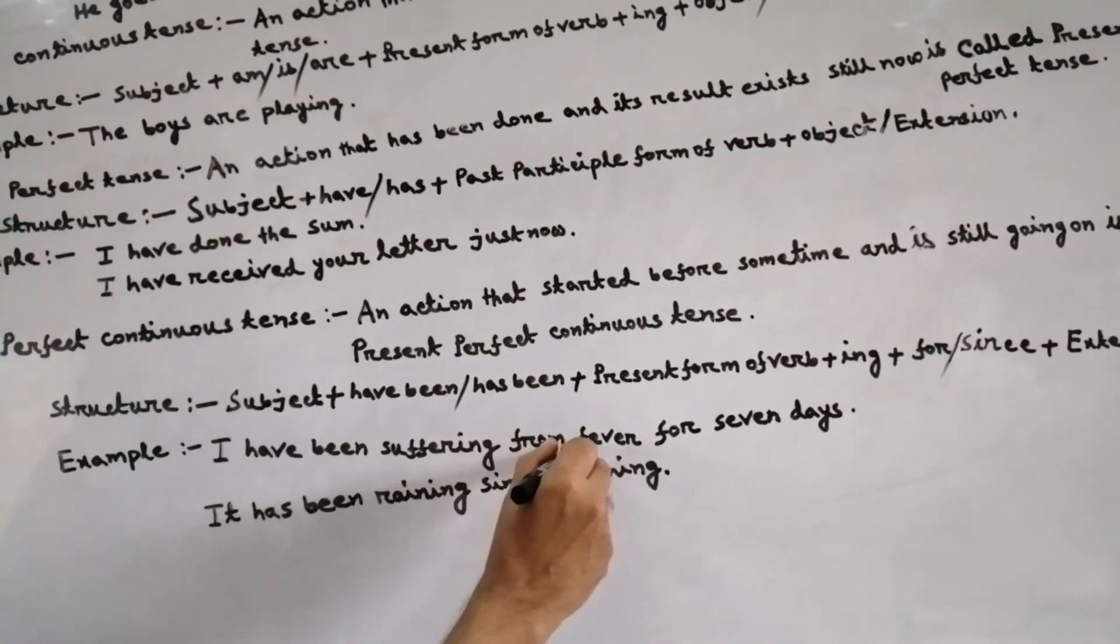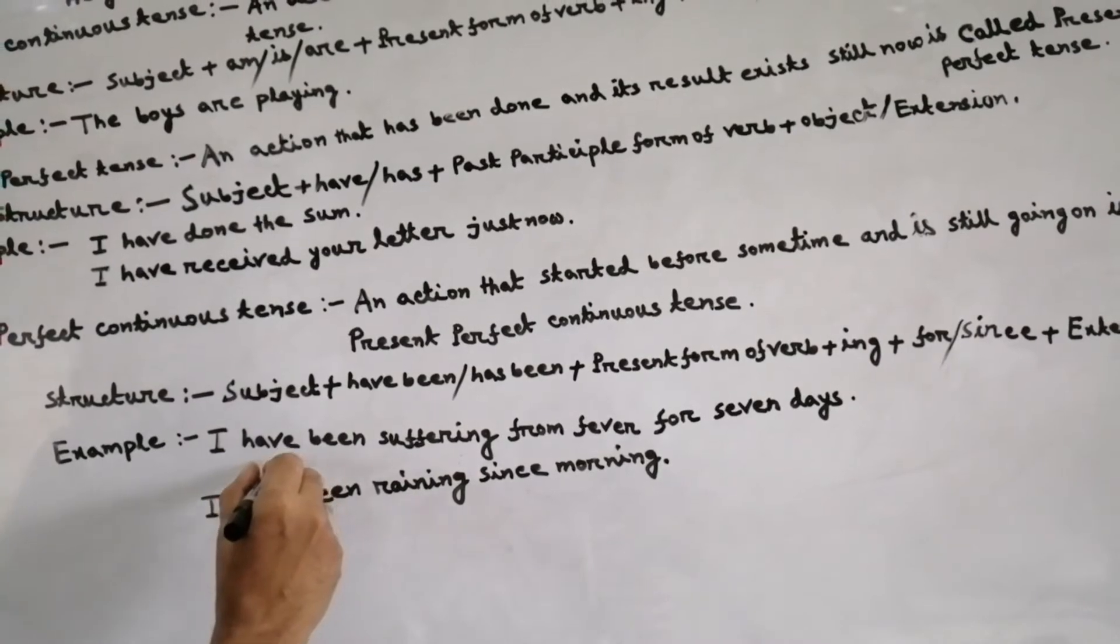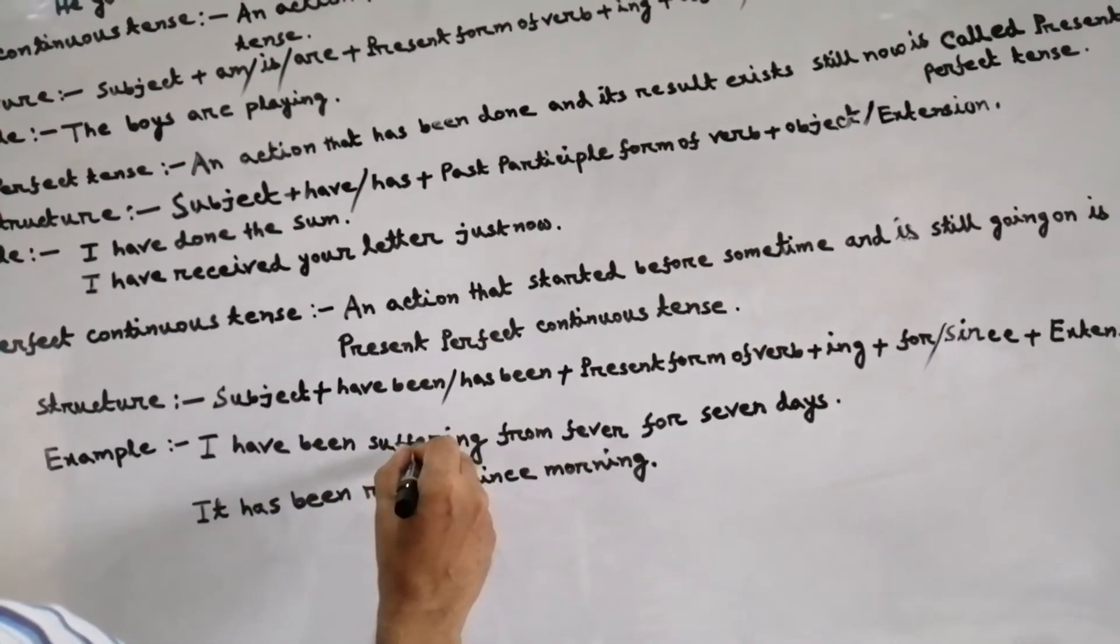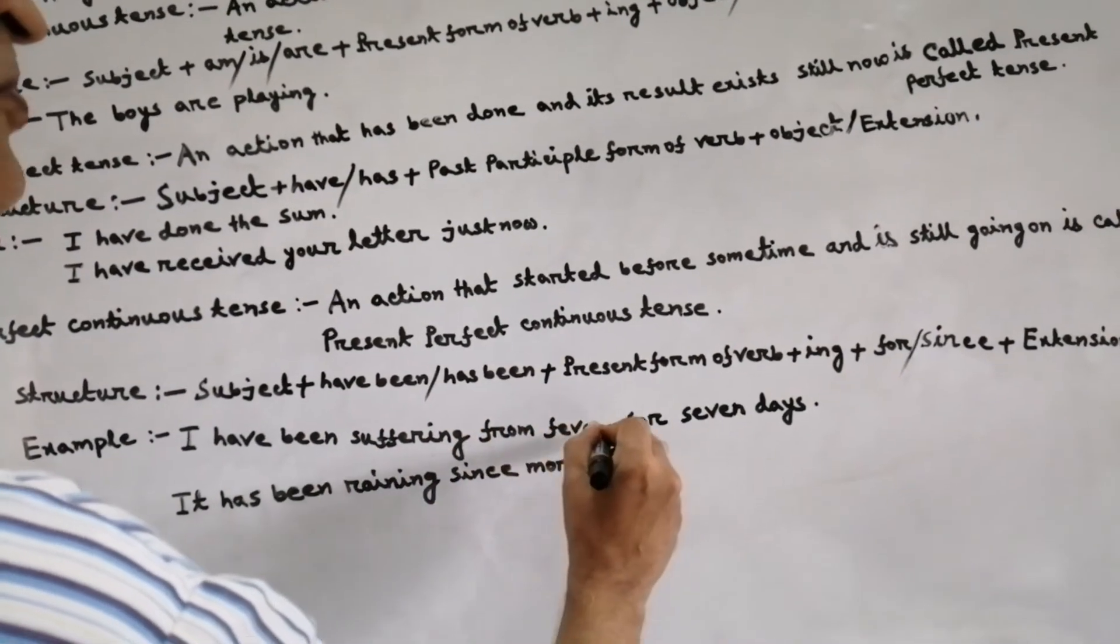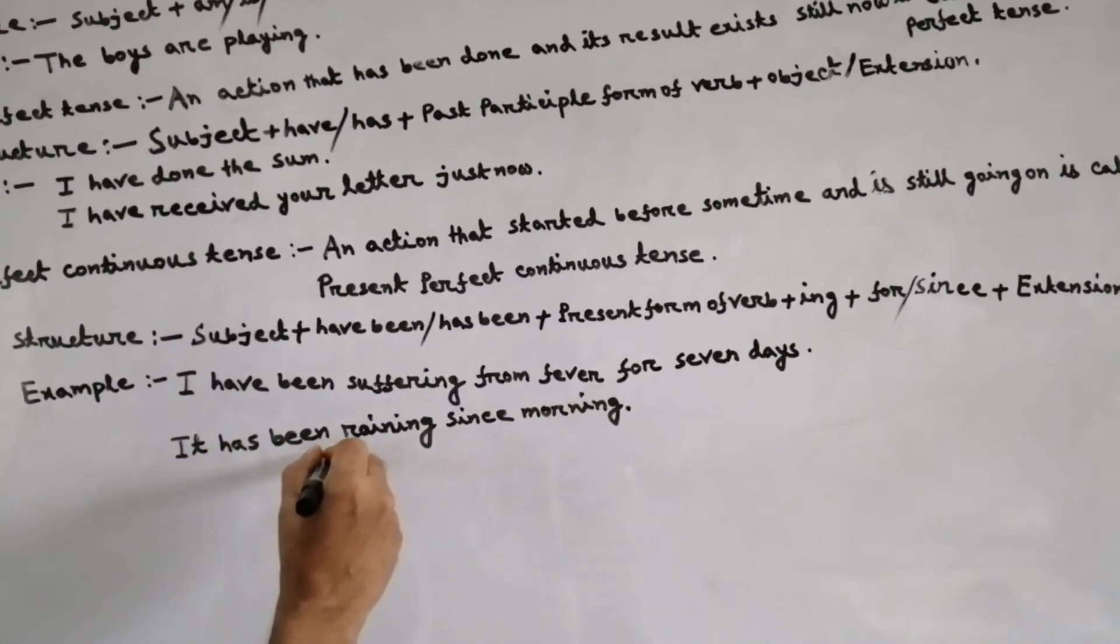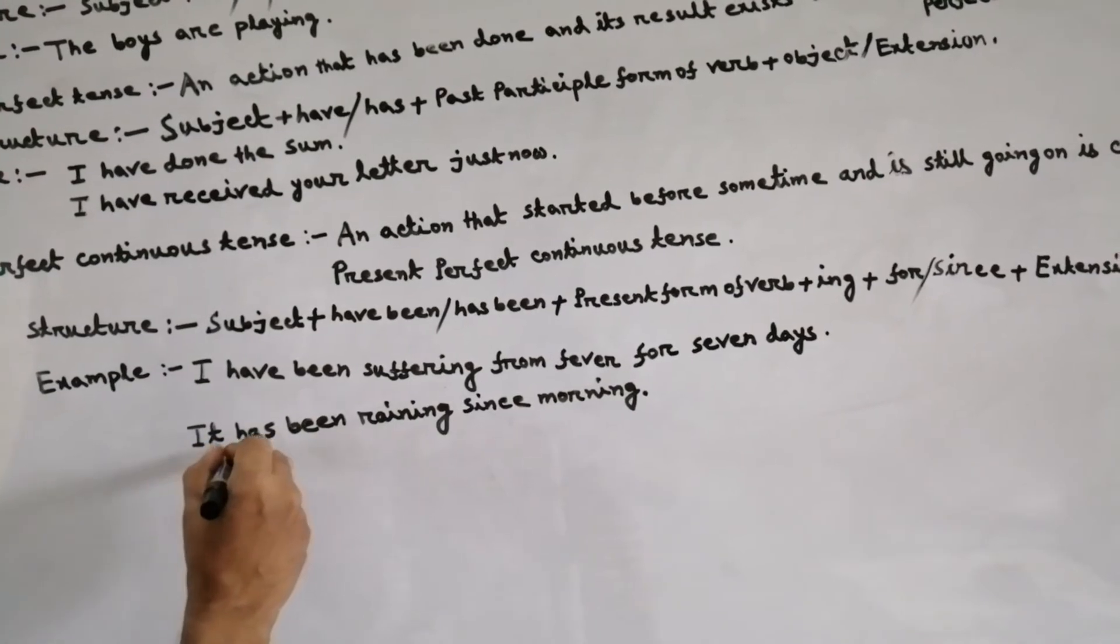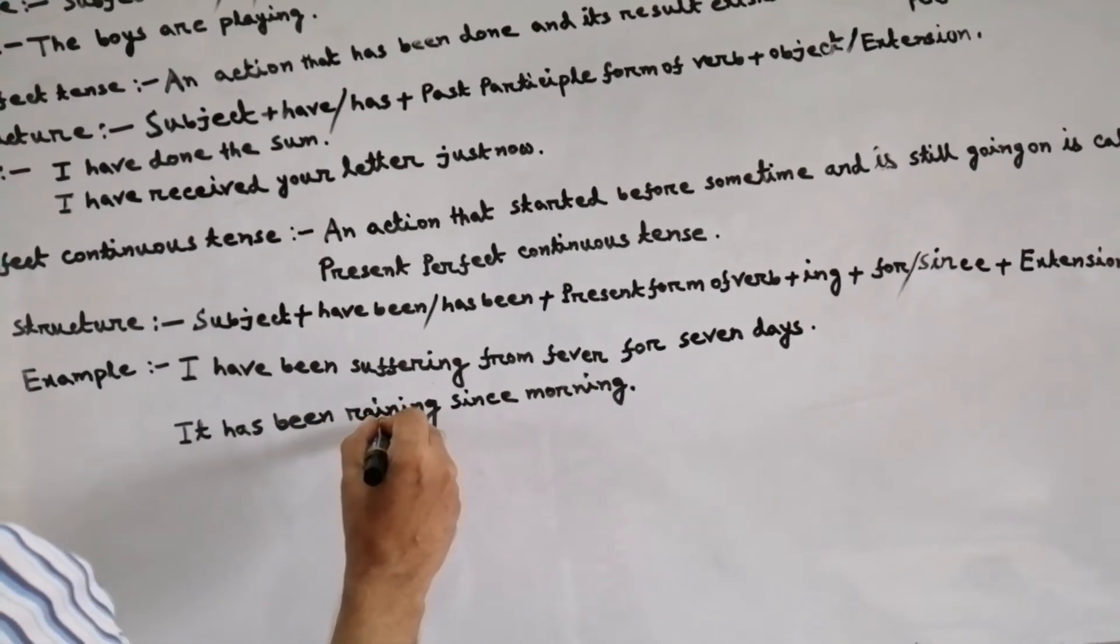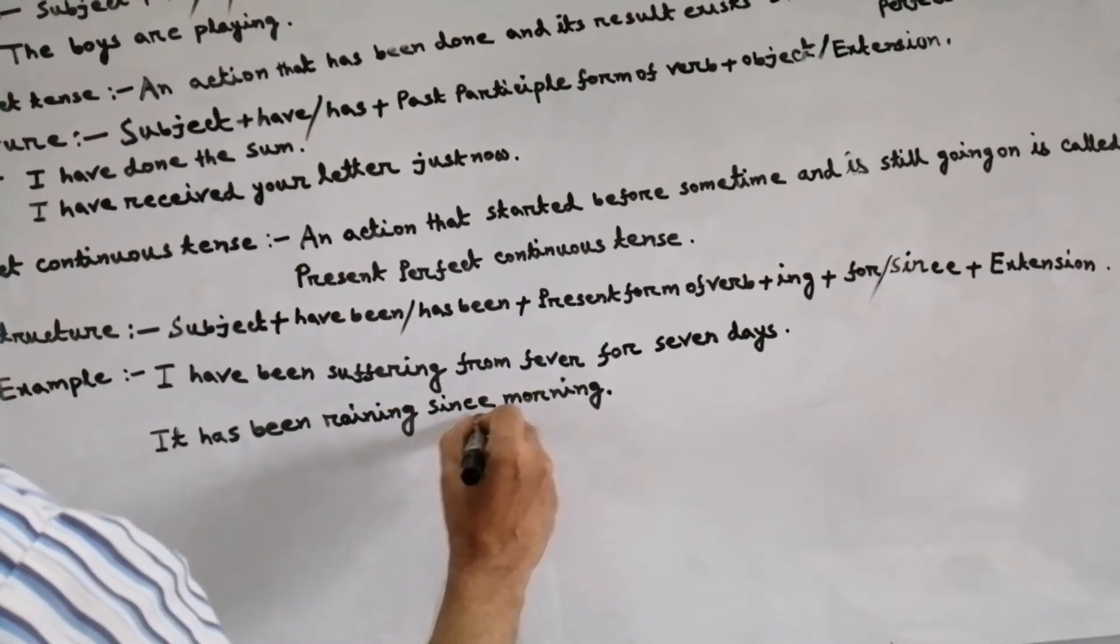Example: I have been suffering from fever for seven days. Here I subject, have been auxiliary verb, suffering principal verb with ing, from fever for seven days extension. It has been raining. Here it subject, has been auxiliary verb, raining principal verb with ing, since morning extension.